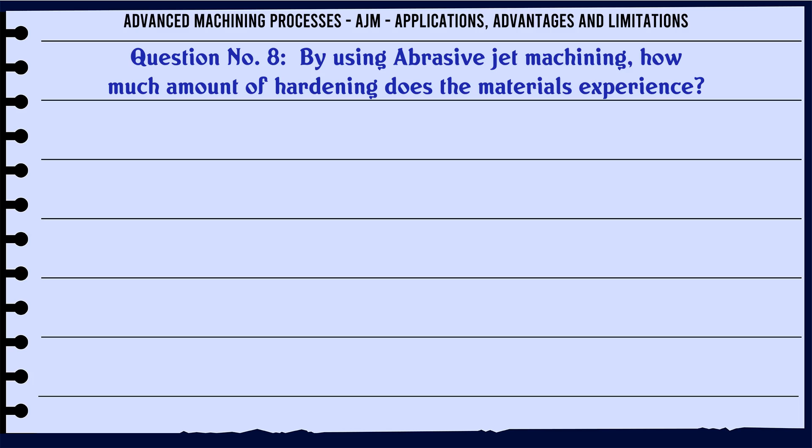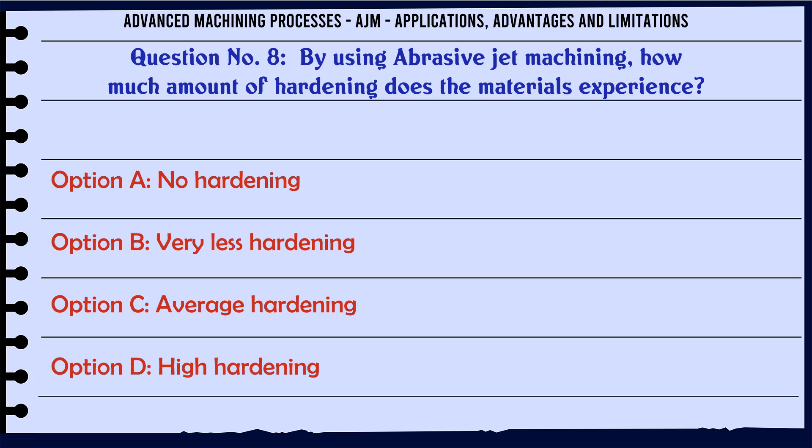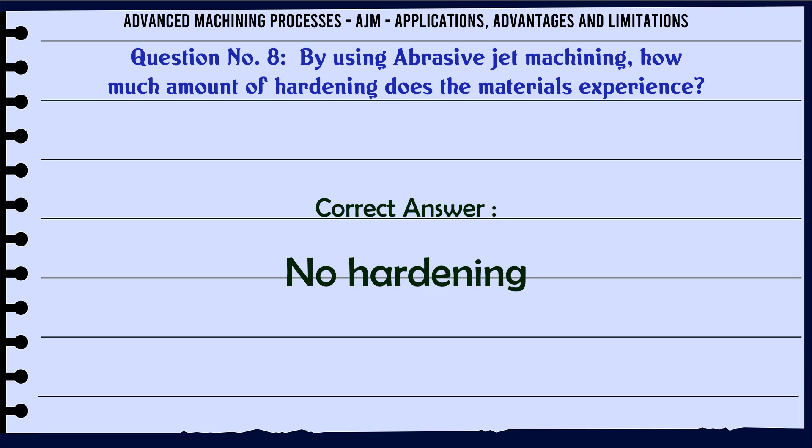By using abrasive jet machining, how much hardening do the materials experience? Option A: No hardening. Option B: Very less hardening. Option C: Average hardening. Option D: High hardening. The correct answer is no hardening.